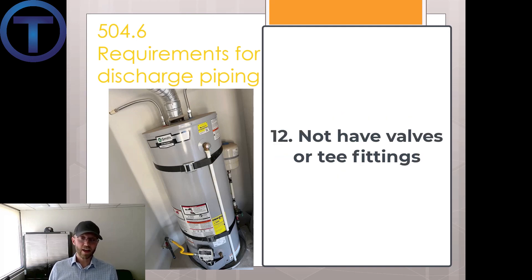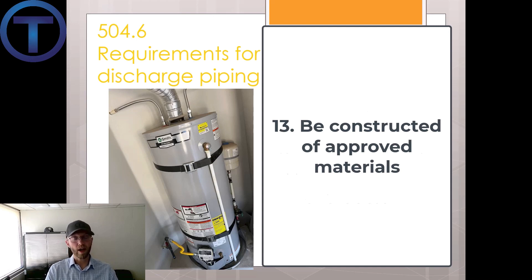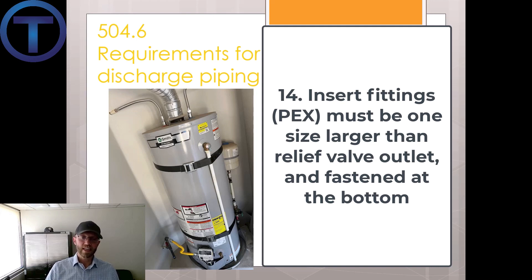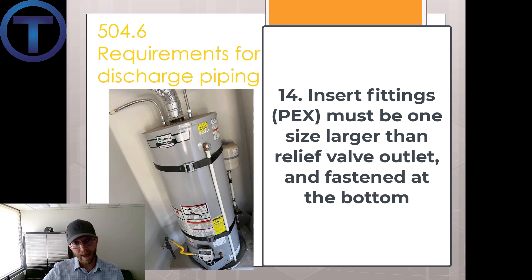Number twelve: it shall not have valves or T's. Number thirteen: shall be constructed of those specific materials listed — you can't just use whatever you want. Number fourteen: the pipe has to be one nominal size larger than the size of the relief valve outlet where the relief valve discharge piping is installed with insert fittings. In other words, if you're using PEX, a barbed PEX fitting shrinks down the inside diameter, so you need to use a larger pipe.